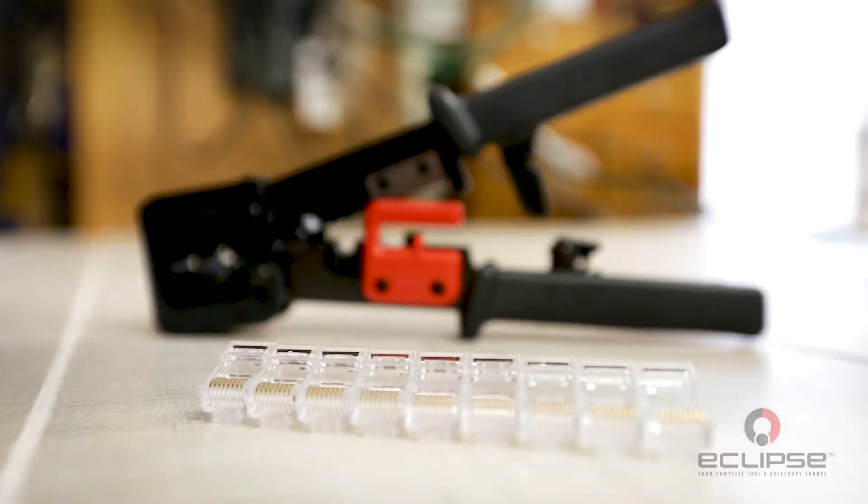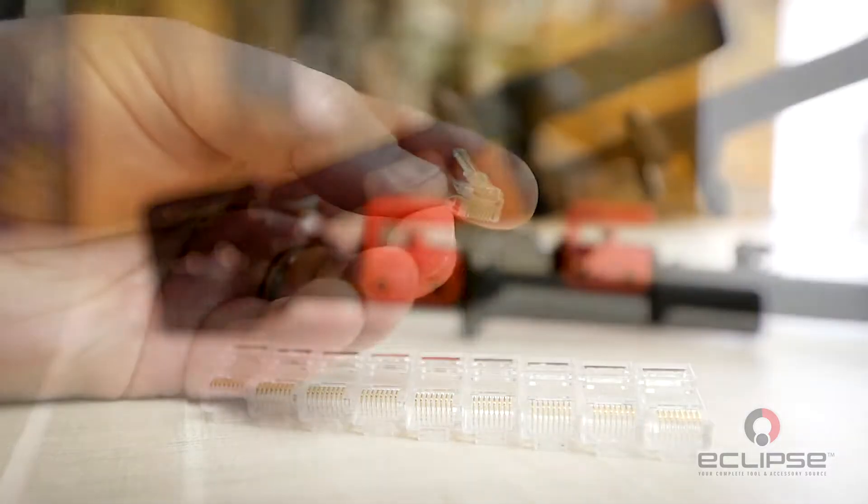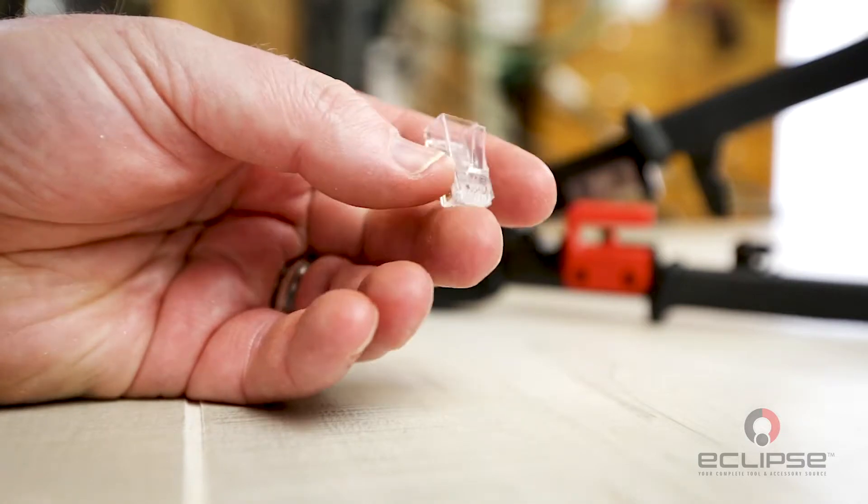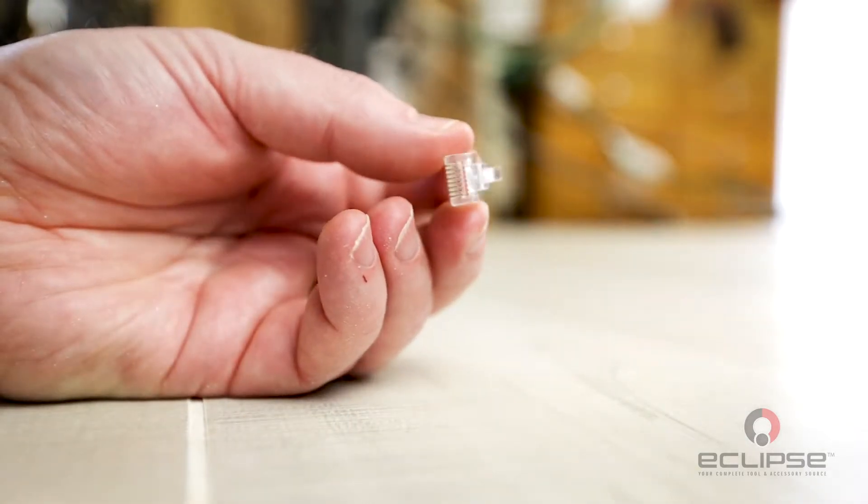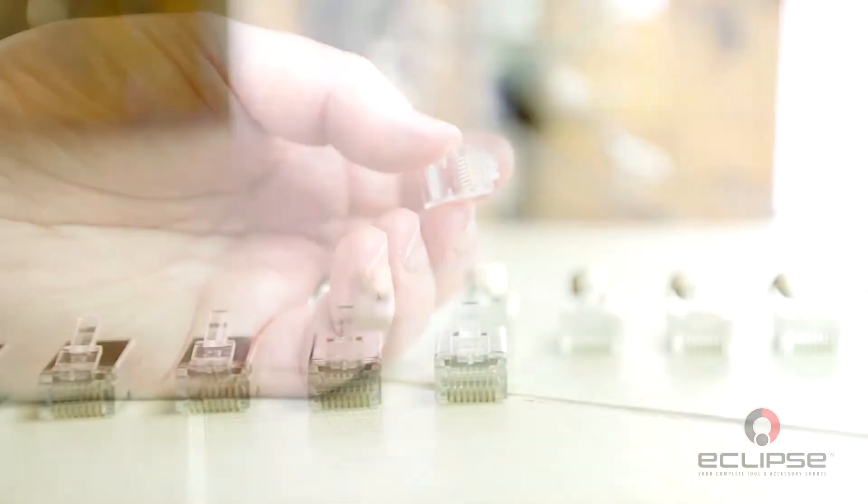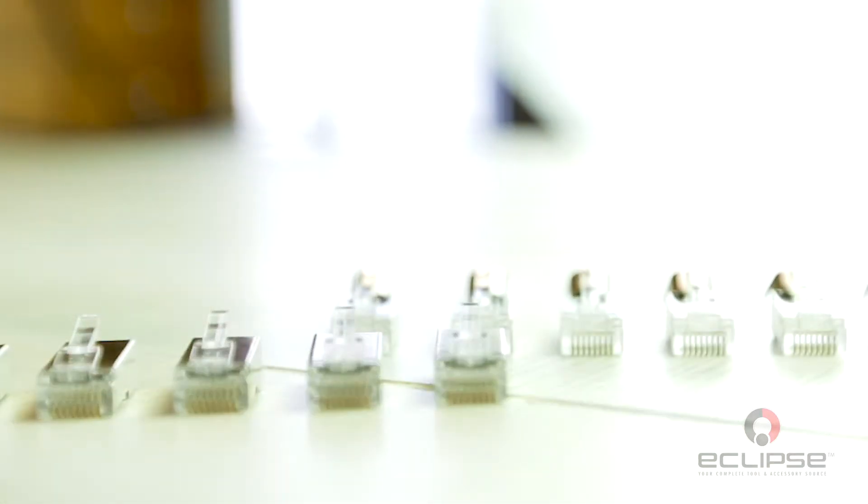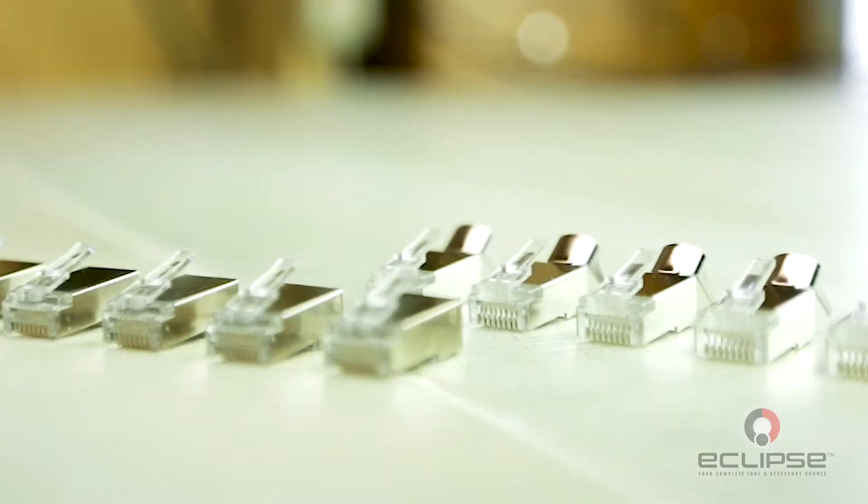In addition to the Quick Through crimp tool, Eclipse offers a full line of Quick Through RJ-45 connectors, including Cat 5 and Cat 6 non-shielded, Cat 6 internal shielded, and Cat 6 external shielded.